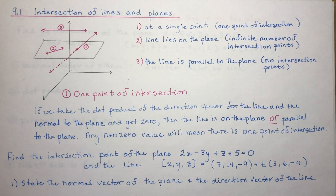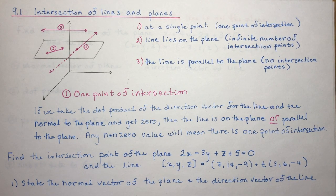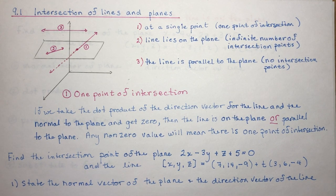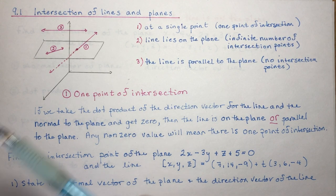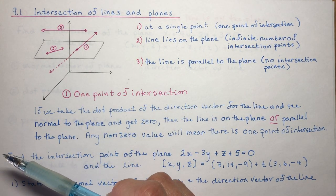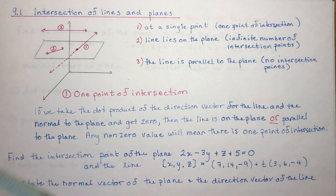9.1 is intersections of lines and planes. In this section there's a lot covered and I'm going to break it into two parts. The first thing I'm going to do is talk to you about lines and planes. In the second lesson I will do intersections of lines.